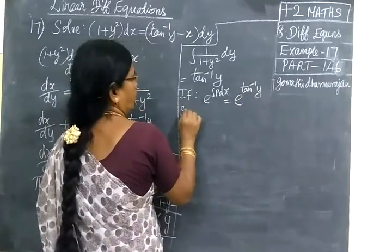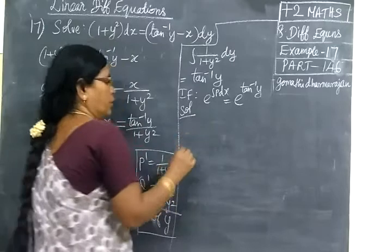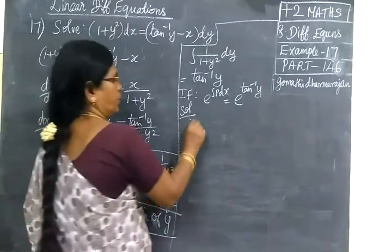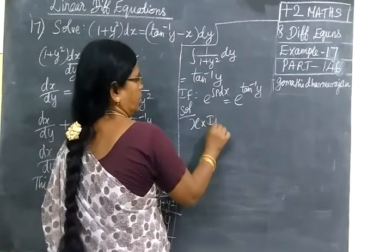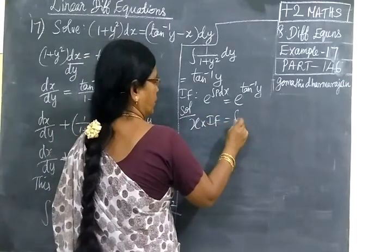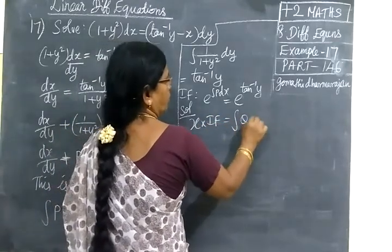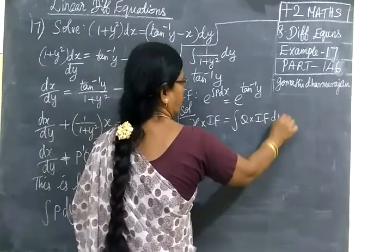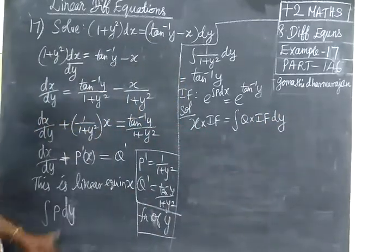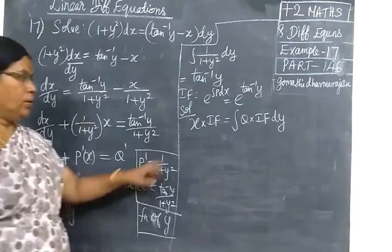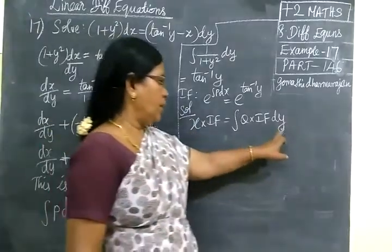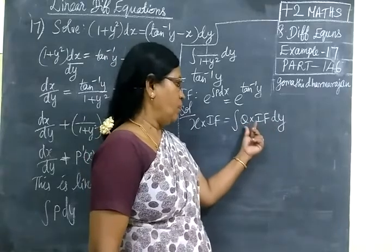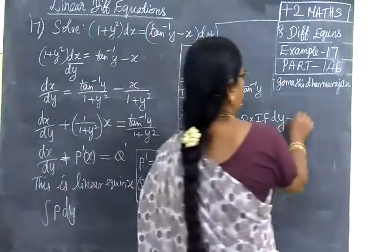Then next, you have to find the solution. This is a linear equation in x. So the solution is: x times the integrating factor equals the integral of Q times the integrating factor dy, plus c. That is: x times e to the power tan inverse y equals the integral of tan inverse y divided by (1 plus y squared) times e to the power tan inverse y, dy plus c.